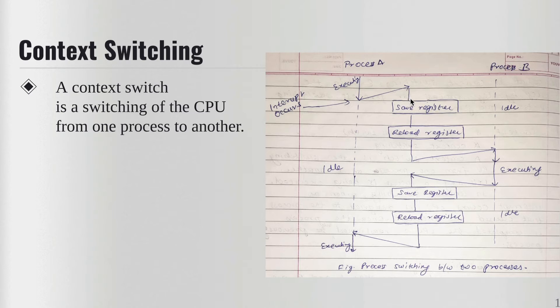The information about Process A, which is the context of Process A, is going to be saved inside the PCB, which is the Process Control Block. That information is saved so it can be reloaded at the time of resuming Process A. Then we reload the register and Process B starts executing.